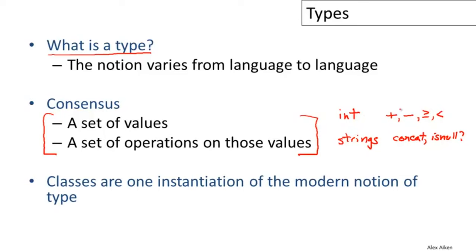It's worth noting that classes and types need not be the same thing — it's often convenient in OO languages to equate them, but there are designs where they differ. Consider an assembly language fragment 'add R1, R2, R3'. At the assembly language level, we can't tell what types R1, R2, and R3 have — they're just registers with zeros and ones, and the add operation will process them regardless of whether it makes sense.